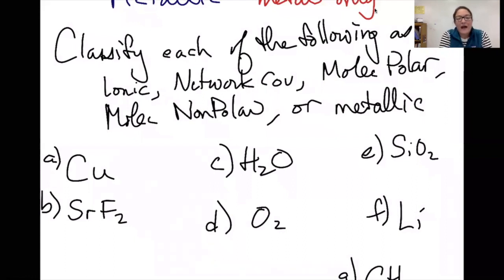A typical problem will ask you to classify each of the following as ionic, network covalent, molecular polar, molecular nonpolar, or metallic. So the biggest decision that I make in identifying these is deciding whether it's a metal or nonmetal or both. So Cu is just a metal, which makes it really easy to identify. Another one that I can identify really easily is SiO2 because it's one of our special cases. So with that one is network.